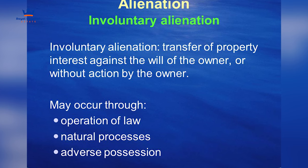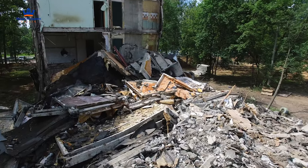Eminent domain is actually a form of involuntary alienation. With involuntary alienation, the transfer of property or land can happen without the owner's consent. That is the main difference between eminent domain and involuntary alienation.